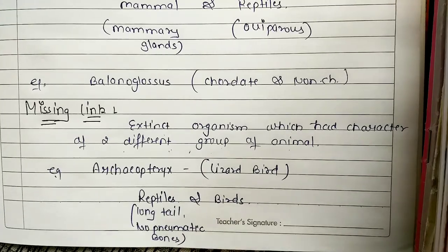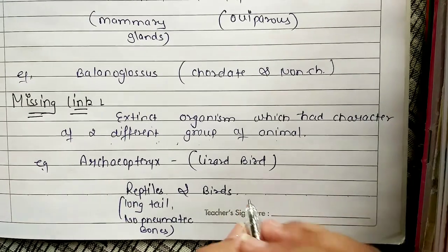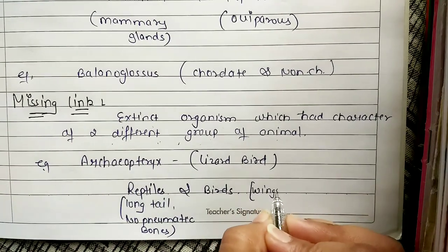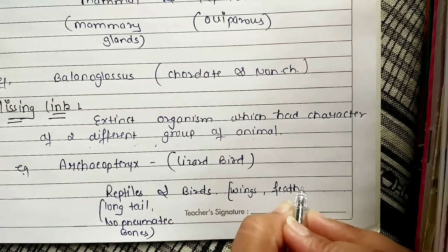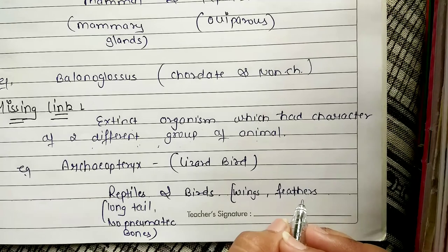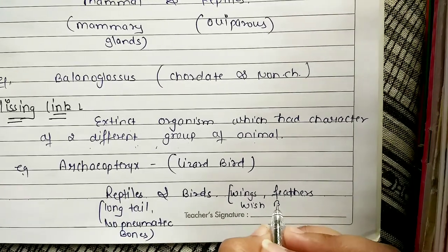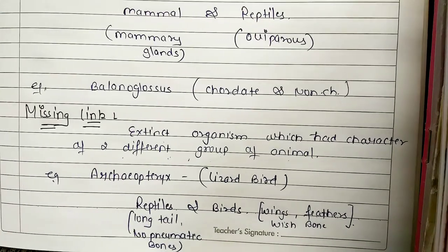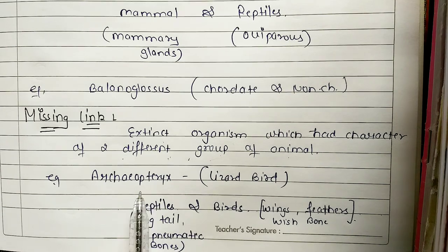Archaeopteryx resembled birds because it had feathers, wings, and wishbone. It resembled reptiles because it had no pneumatic bones. So Archaeopteryx had characters of both reptiles and birds, making it the missing link between these two groups. But now it is extinct.